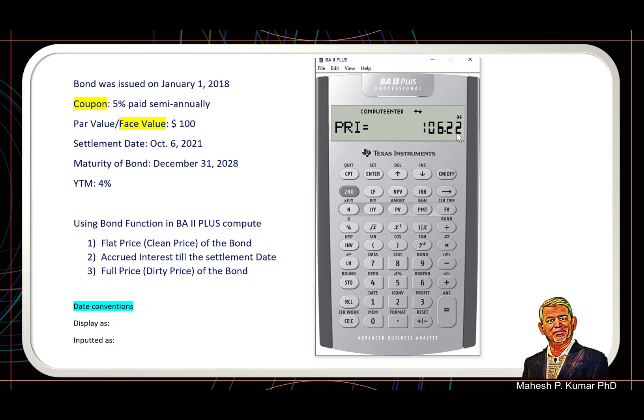But since we want to compute the full price of the bond as well, therefore we will store this in first memory slot. Nothing would happen on screen, but it has been stored. Then we click down arrow.